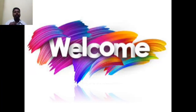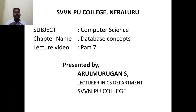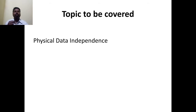Good morning students. This is Arul Murugan. Welcome to my digital class. Chapter name: Database Concepts, lecture video part 7. In today's class we are going to discuss physical data independence. We already know that data independence means the ability to change the schema definition at one level without affecting the next higher level. There are two types: physical data independence and logical data independence. Today we discuss physical data independence.